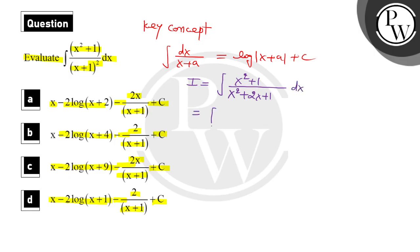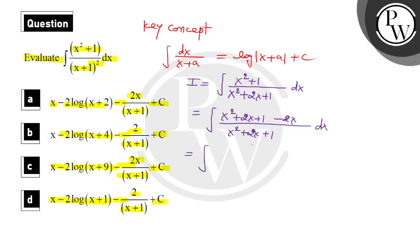To simplify, we write the numerator x² + 1 as (x² + 2x + 1) minus 2x — that is, we add and then separate 2x. So the numerator becomes (x² + 2x + 1) − 2x, divided by (x² + 2x + 1), which is (x+1)² dx.